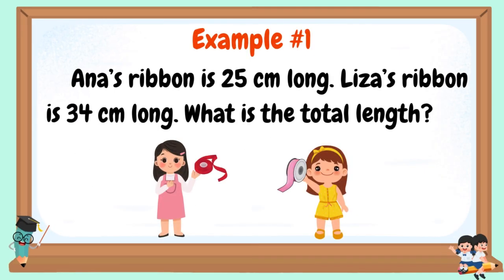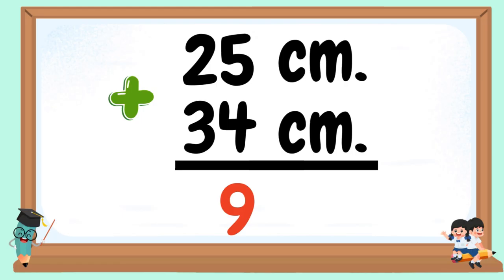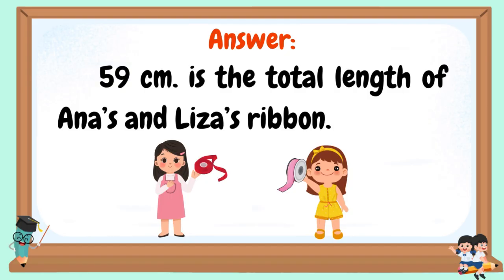Example number 1: Anna's ribbon is 25 centimeters long. Lisa's ribbon is 34 centimeters long. What is the total length? 25 centimeters plus 34 centimeters. 5 plus 4 equals 9. 59 centimeters is the total length of Anna's and Lisa's ribbon.